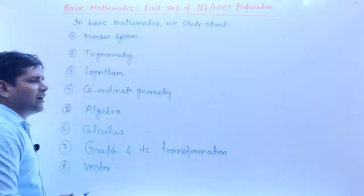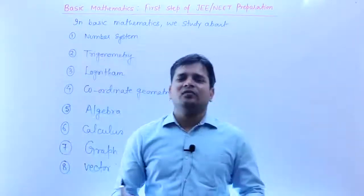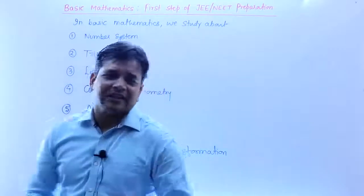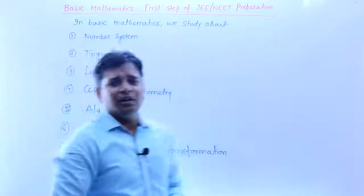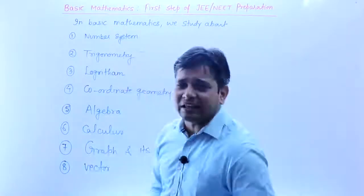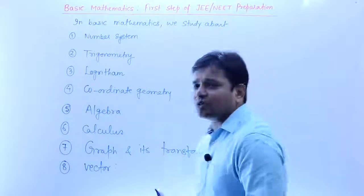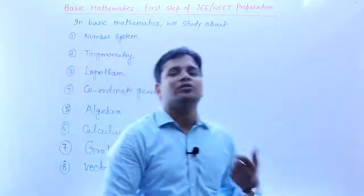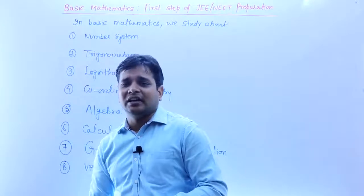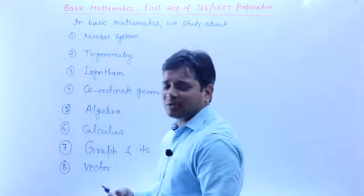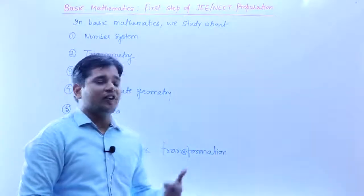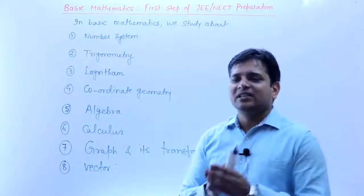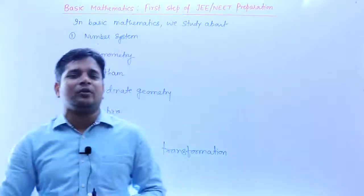These are important points of algebra, calculus, vectors - basic points. In physical chemistry or physics, if you have different types of problems, these are important points. For example, permutation combination is used in chemistry. If you use permutation combination it will become easy and fast, but if you don't it will become slow and problematic.